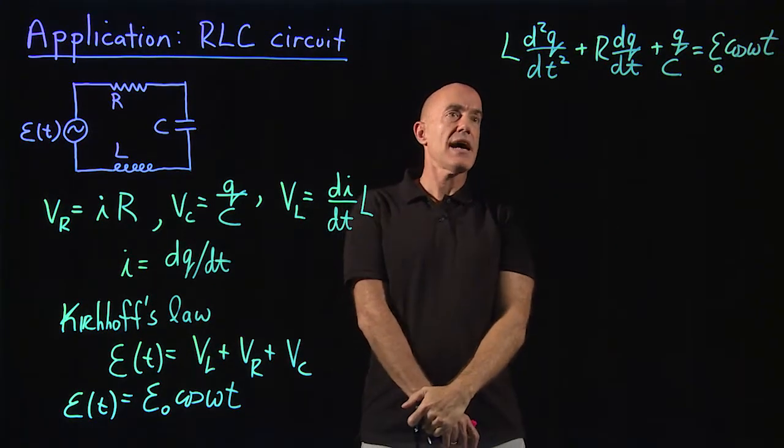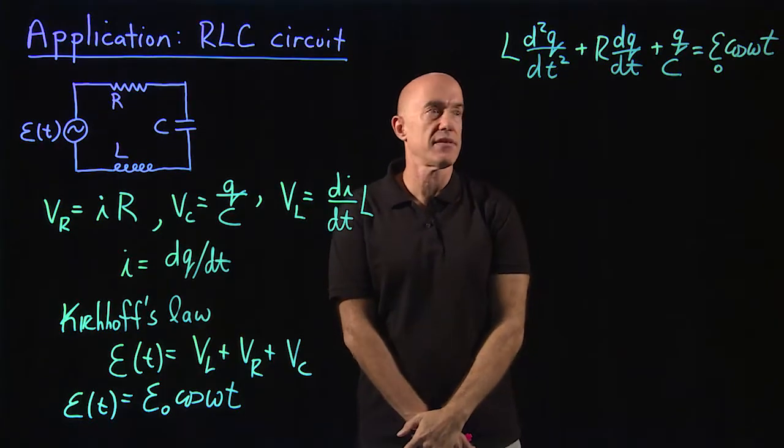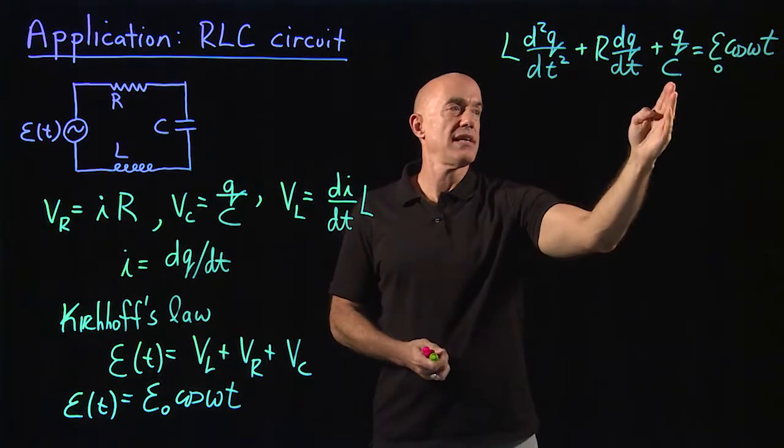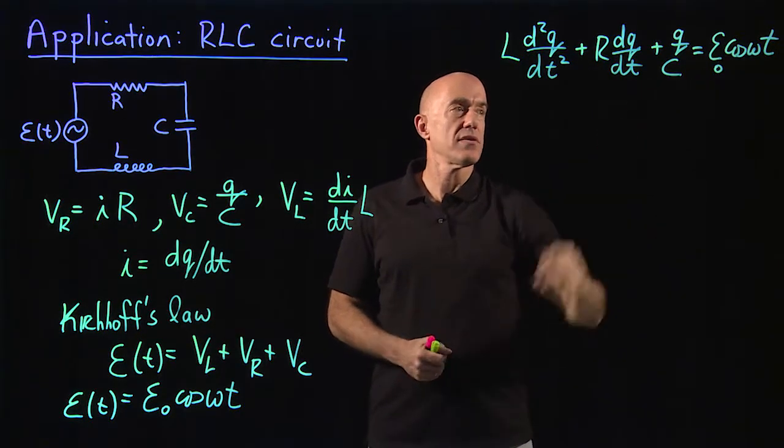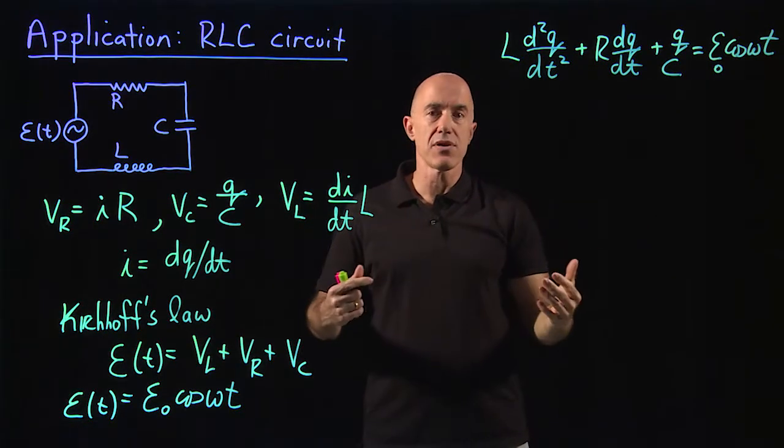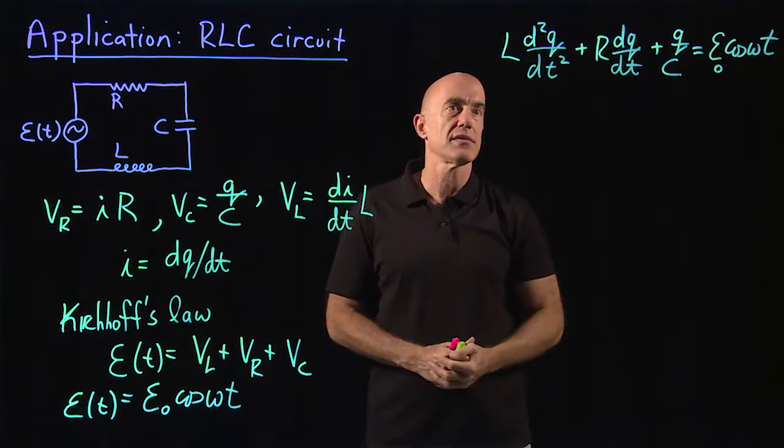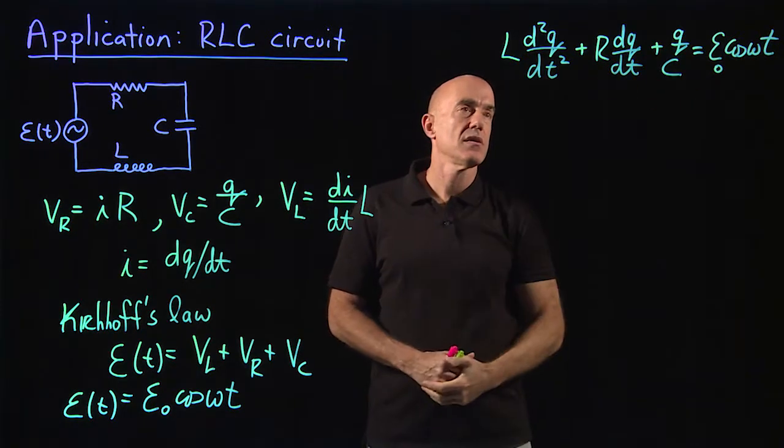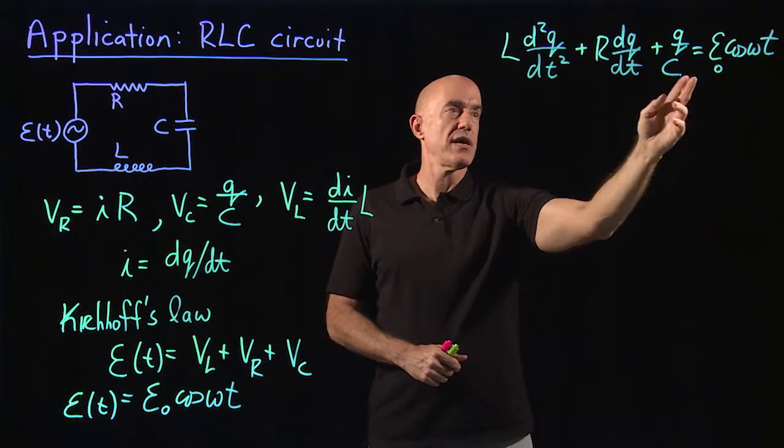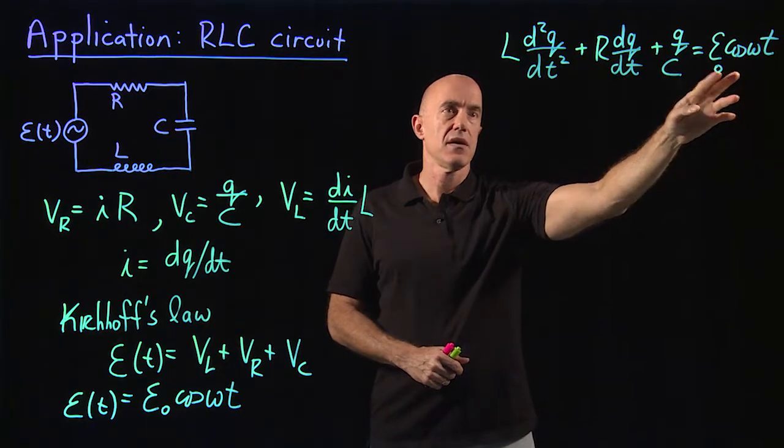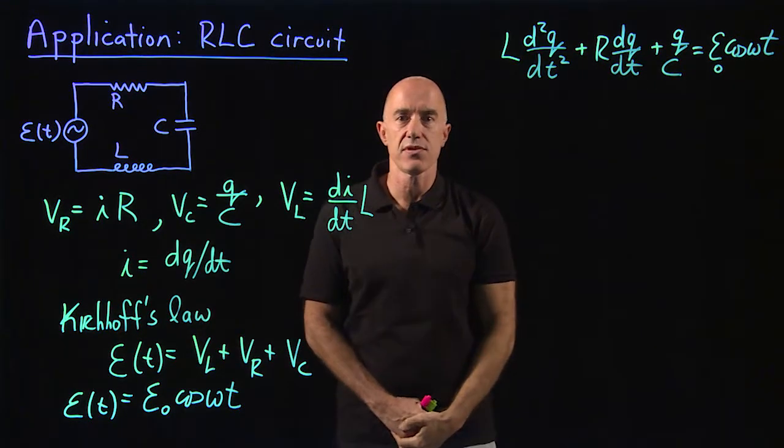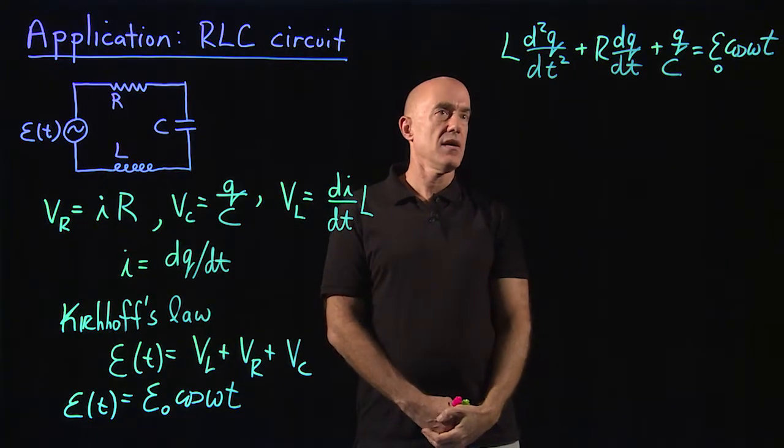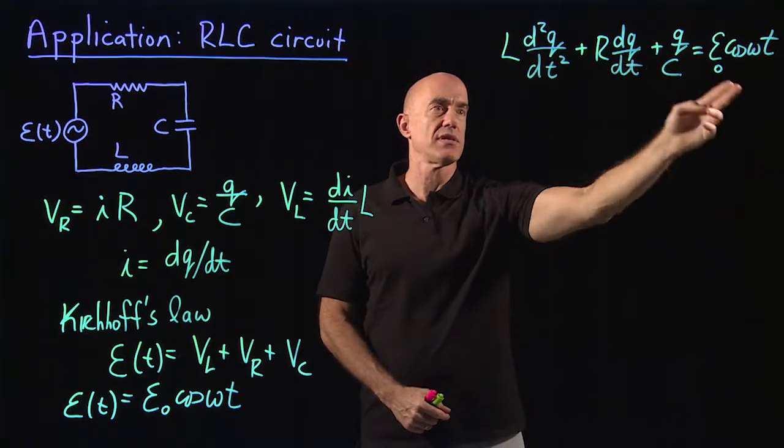And that's our differential equation. Now you should recognize this. L, R, C, E naught are parameters that are constant. Omega is a constant. So this is a second order linear differential equation inhomogeneous with constant coefficients. So that's exactly what we've been studying.